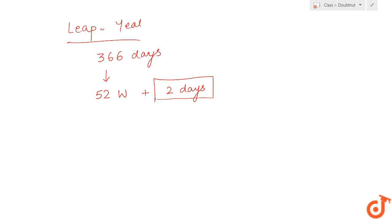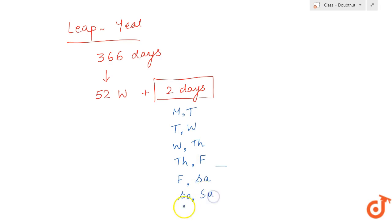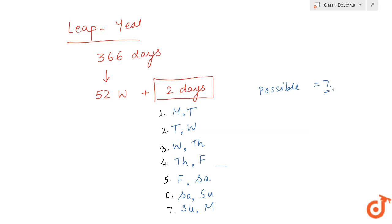Now for a leap year, the two remaining days have to be consecutive. They could be Monday and Tuesday, or Tuesday and Wednesday, or Wednesday and Thursday, or Thursday and Friday, or Friday and Saturday, or Saturday and Sunday, or Sunday and Monday. So there are seven possibilities — the total number of possible outcomes is again seven.